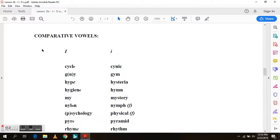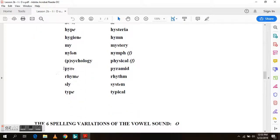Here are comparative vowels between the I and the I. Cycle, cynic. Guy, gym. Hype, hysteria. Hygiene, hymn. My, mystery. Nylon, nymph. Psychology, physical. Pyre, pyramid. Rhyme, rhythm. Sly. Type. Typical.